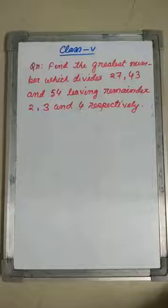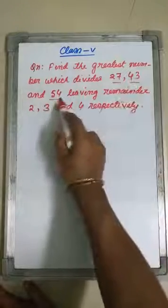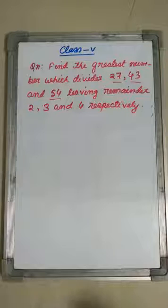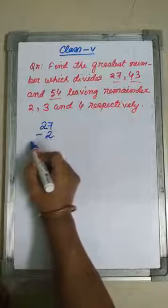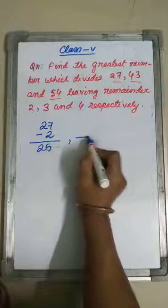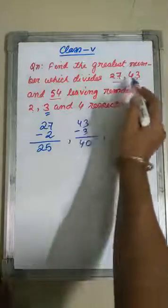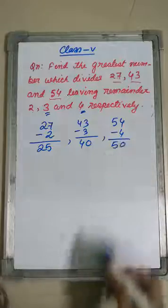The next example: find the greatest number which divides 27, 43, and 54, leaving remainders 2, 3, and 4 respectively. To solve this, for 27 you get remainder 2, so 27 minus 2 is 25. For 43, you get remainder 3, so 43 minus 3 is 40. For 54, you get remainder 4, so 54 minus 4 is 50.